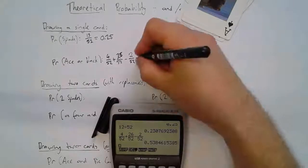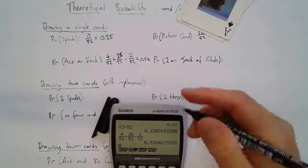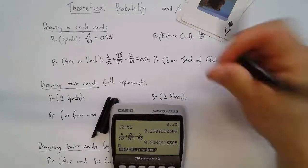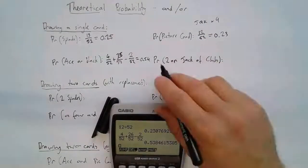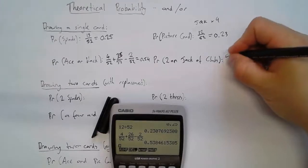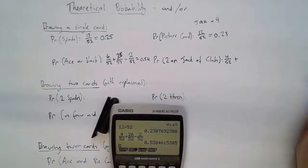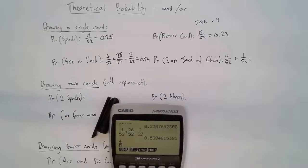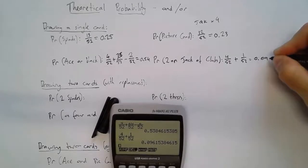That gives 0.54. Next: probability of a two OR the jack of clubs. How many twos are there? Four twos out of 52. OR means plus. How many jacks of clubs are there? One. So 4/52 plus 1/52 is 5/52, which is 0.096.